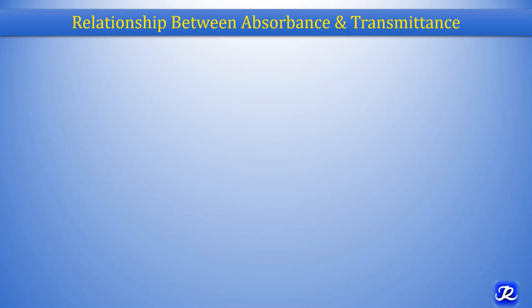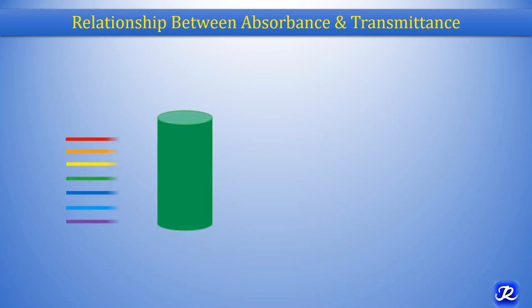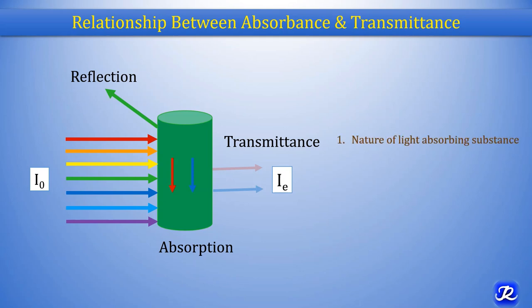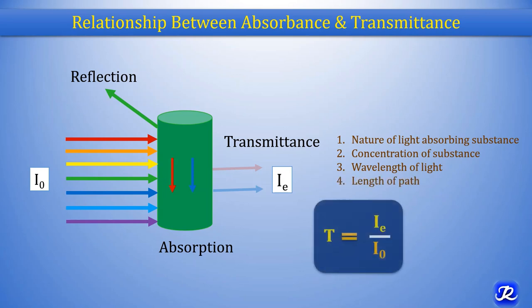What is the relationship between absorbance and transmittance? When light passes through a colored solution, some amount — called I0, that is incident light — is reflected, some is absorbed, and some amount of light is transmitted, denoted by It. Transmittance depends on the nature of the light-absorbing substance, concentration of that substance, wavelength of light, and length of path. That is why transmittance is inversely related to absorbance. It is denoted as T = It / I0, that is transmitted light upon incident light.